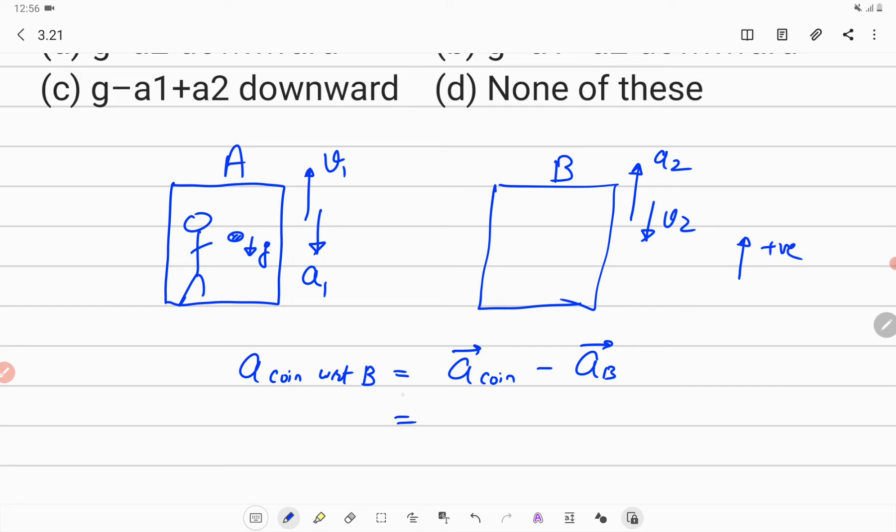So acceleration of coin, because it is going with G acceleration in the downward direction, should be minus G. And acceleration of car B is in the upward direction, which is A2. So this should be minus G minus A2, or you can take minus common.